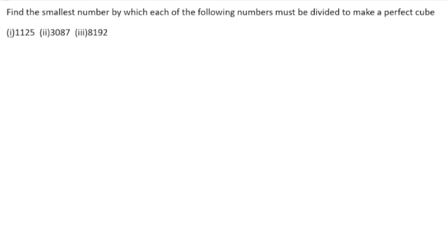Find the smallest number by which each of the following numbers must be divided to make a perfect cube. The given numbers are not perfect cubes. For a number to be a perfect cube, it should be multiplied by itself three times. If we find any prime factor not in a group of three, we will divide by that number to make it a perfect cube.